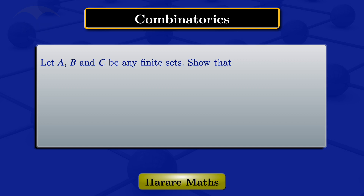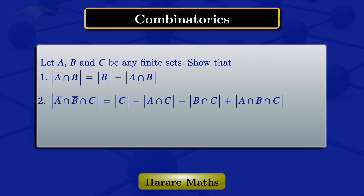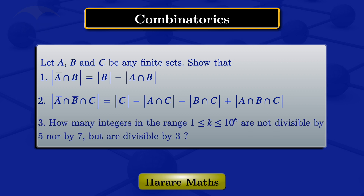Let A, B and C be finite sets. In this video I'm going to show that the cardinality of A complement intersection B equals the cardinality of B minus the cardinality of A intersection B. Then I'll show that the cardinality of A complement intersection B complement intersection C equals the cardinality of C minus the cardinality of A intersection C minus the cardinality of B intersection C plus the cardinality of A intersection B intersection C. Then I'll consider the range 1 to 1 million and find the integers that are not divisible by 5 nor by 7 but are divisible by 3.